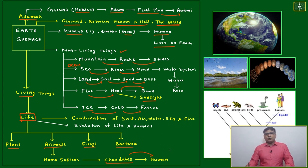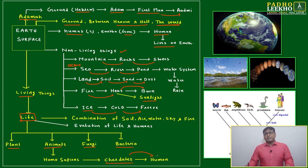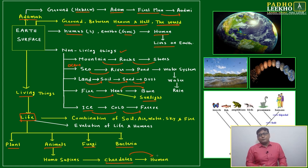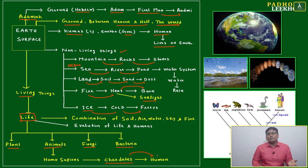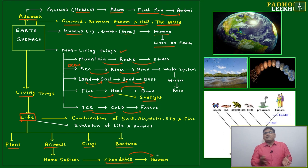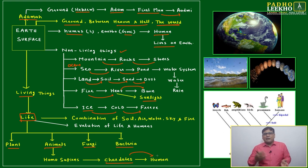Life will further divide into plants, animals, fungi, and bacteria. From animals, the most developed form is called human. We are now able to distinguish human from animal. If someone calls a human an animal it may feel derogatory, but basically we are also animals — we have simply developed over millions of years.